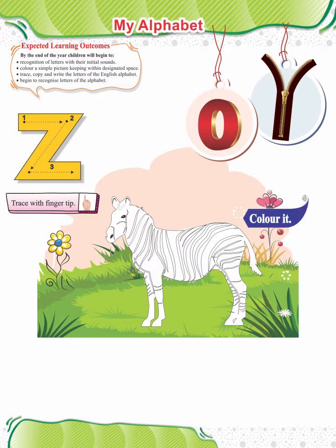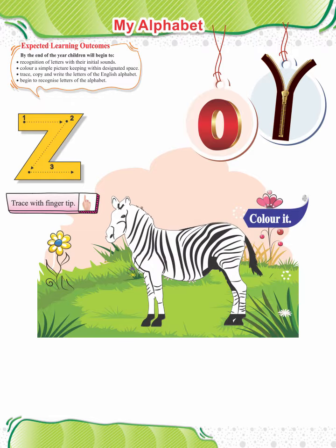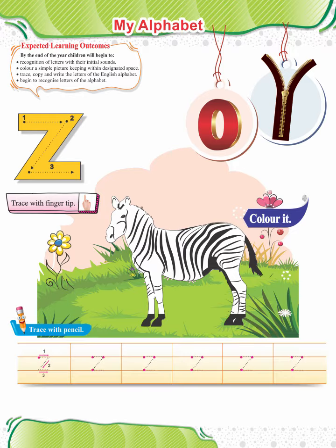Colour it. Colour the black and white zebra. Trace with pencil. Also repeat the sound of the letter Z as you continue tracing it.